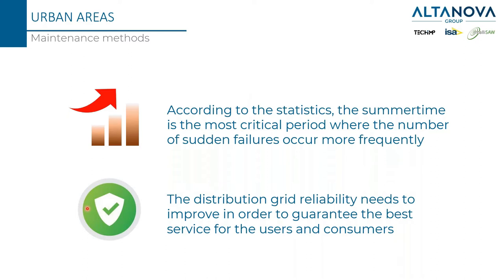According to statistics, summertime is the most critical period where the number of sudden failures occurs more frequently. In the months of May, June, and July, a lot of people are still in the cities and because of the high temperature they switch on their AC air conditioning systems, so energy demand increases a lot. Plus the rising temperature creates higher stress for the medium voltage cables.